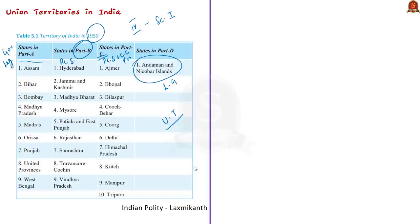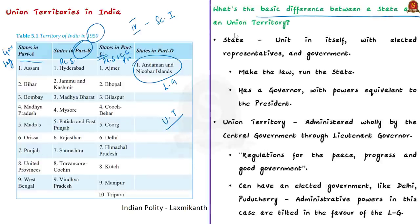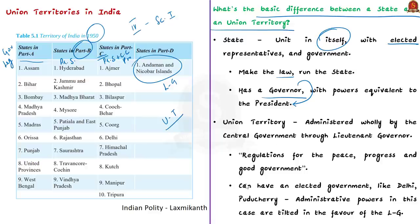A state is a unit in itself with elected representatives and its own government — they make laws and run the state as the central government runs the country. A state also has a governor appointed by the president with equivalent powers. There is a clear division of powers between center and state, and they are supreme in their own spheres. A union territory, by contrast, is administered wholly by the central government through a lieutenant governor appointed by the president, making regulations for the peace, progress and good government of the union territory.